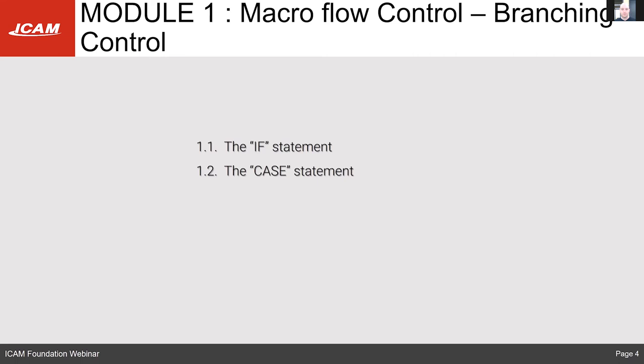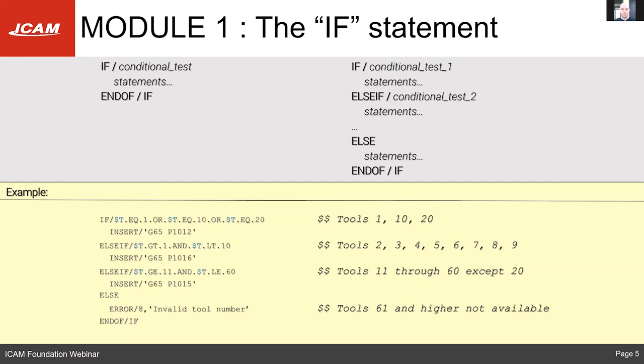For macro flow control on branching control, we have two statements: the IF statement and the CASE statement. The IF statement looks at a conditional test, and if that statement is true it will branch. The CASE statement looks at the value of a variable and if it matches one of the cases it will go to that branch. For the IF statement, we have a basic form where we look at a variable equal to a value.